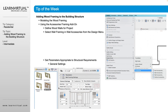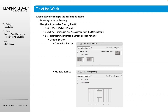From here we have a ton of different settings to customize how the wall is going to be framed out. We can change our stud size, our header size, and what our spacing is going to be. We can also set what our connections will be between the framing, and if there are any fire stop settings, we can customize those as well.